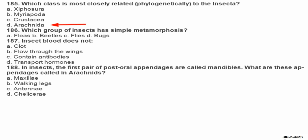Question 186. Which group of insects has simple metamorphosis? A fleas, B beetles, C flies, D bugs. Question 187. Insect blood does not: A clot, B flow through the wings, C contain antibodies, D transport hormones. Question 188. In insects, the first pair of post-oral appendages are called mandibles. What are these appendages called in arachnids? A maxillae, B walking legs, C antennae, D chelicerae.